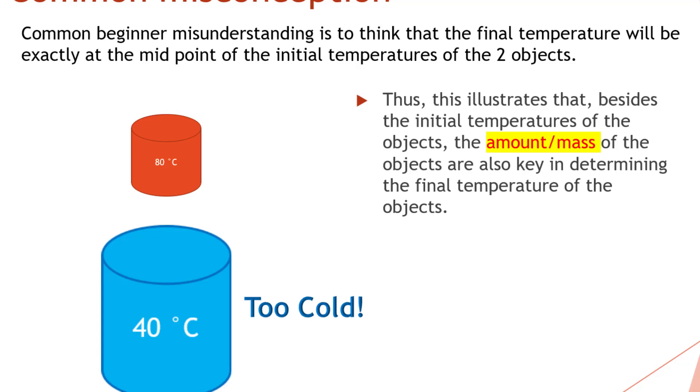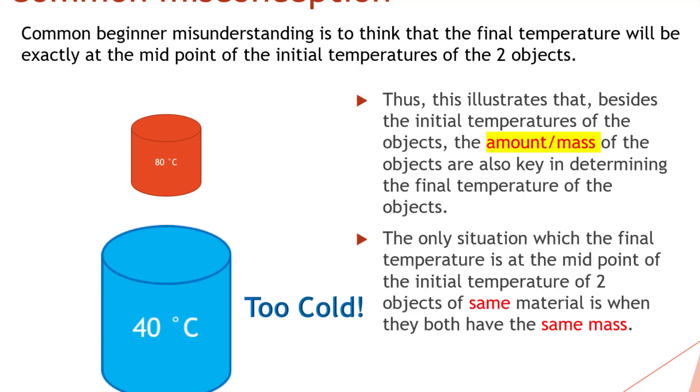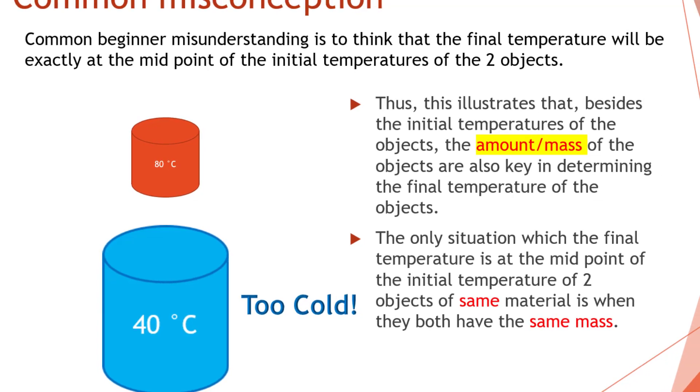Thus, this illustrates that besides the initial temperature of the objects, the amount or the mass of the objects are also key in determining the final temperature. The only situation where the final temperature is exactly at the midpoint of the initial temperature of the two objects of the same material is when they have both the same mass.